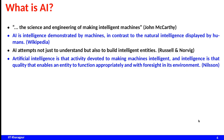One of the early definitions is that AI is the science and engineering of making intelligent machines, given by John McCarthy. Wikipedia says AI is intelligence demonstrated by machines, in contrast to the natural intelligence displayed by humans. From the famous book by Russell and Norvig, AI attempts not just to understand but also to build intelligent entities.